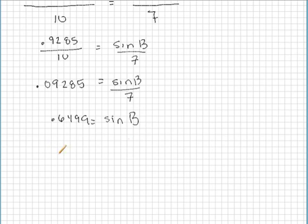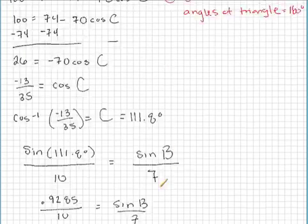So let's use a sine inverse function to solve for b. So by the logic above, b is equal to sine inverse of .6499. With our handy-dandy calculator, it turns out that b is equal to approximately 40.5 degrees. So let's mark that on our triangle.